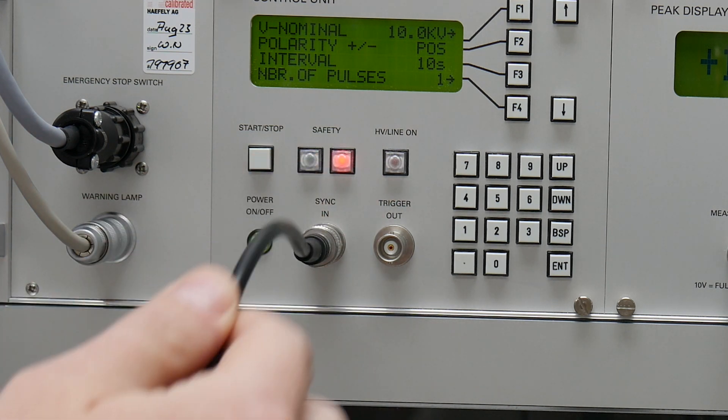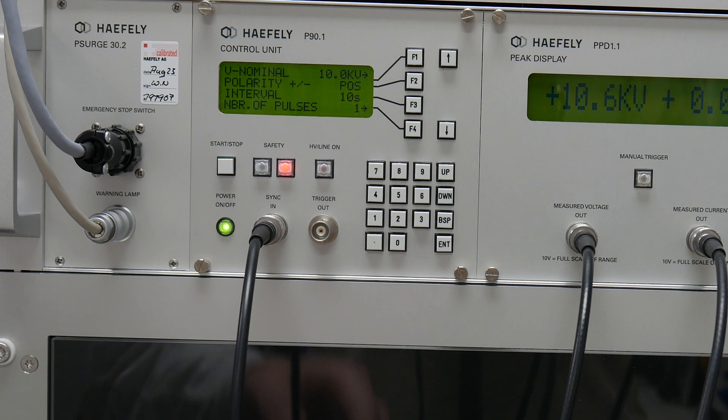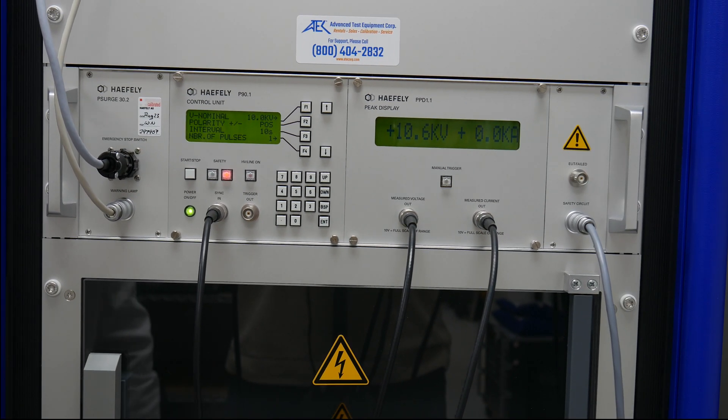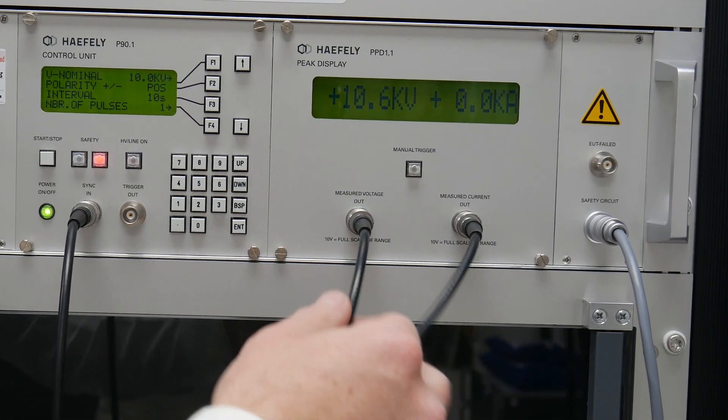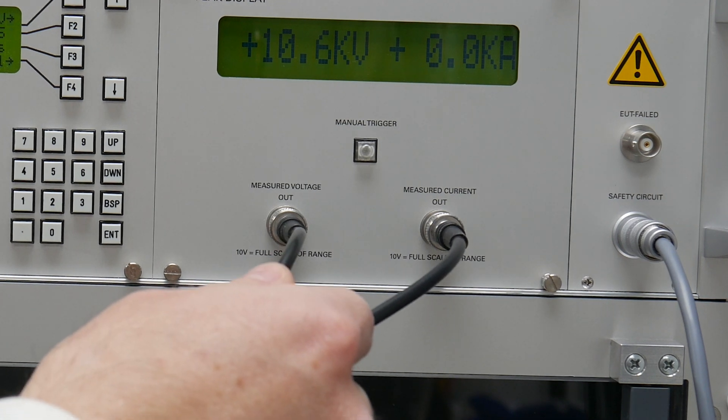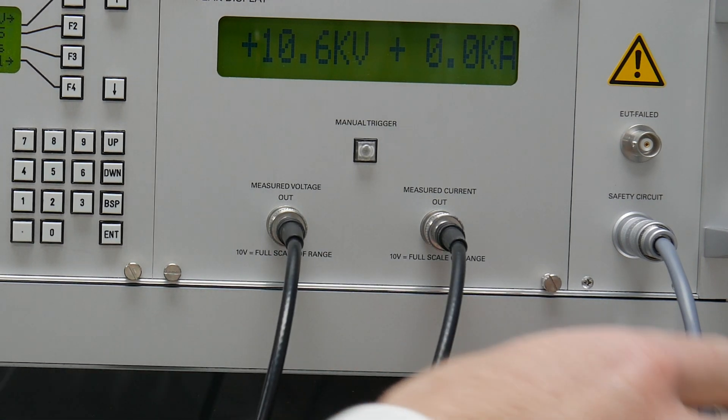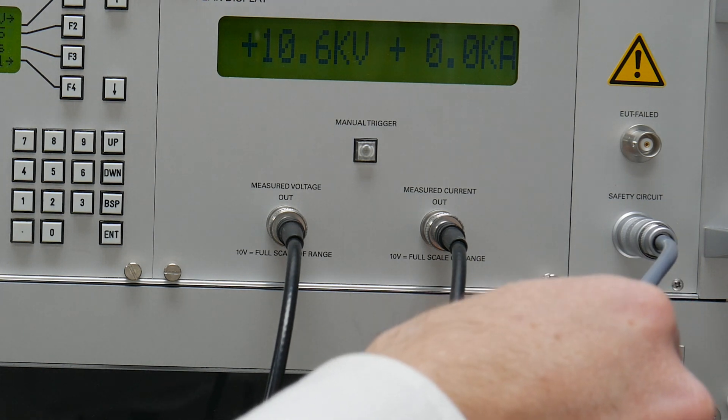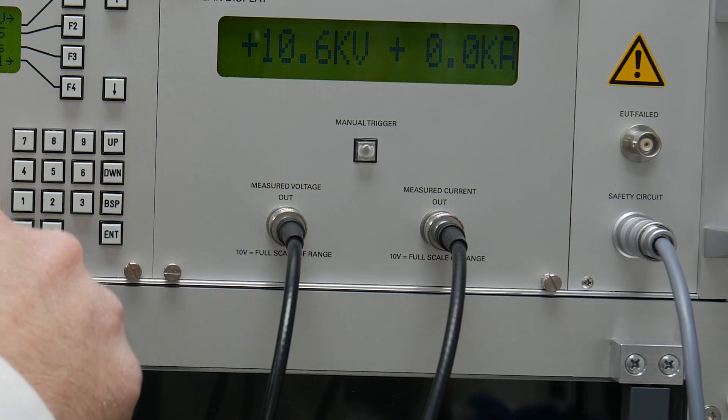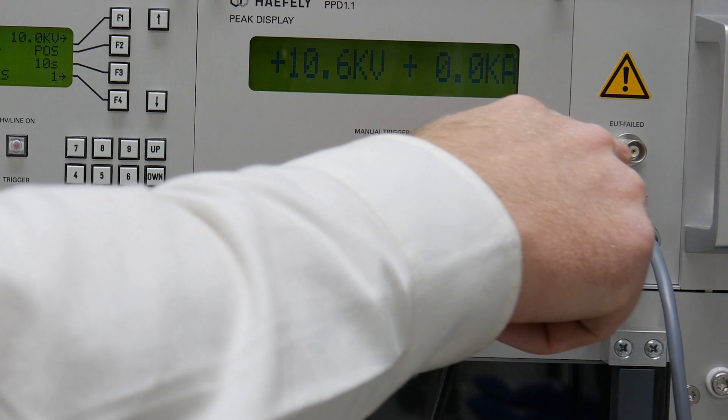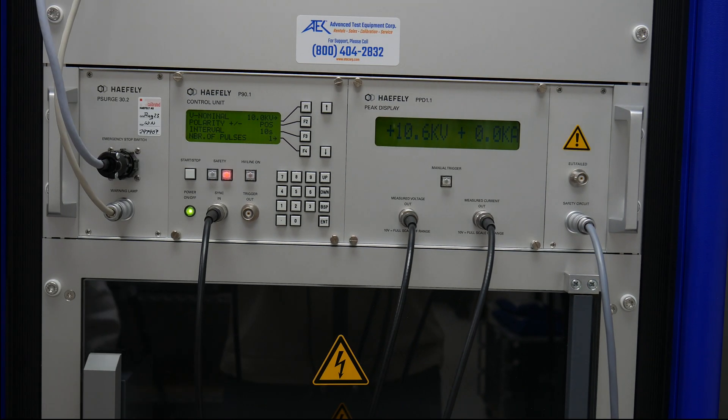Our synchronization cable goes to the CDN to allow pulsing on the power waveform. We also have our current and voltage monitoring ports that go to the oscilloscope. Our safety circuit cable and we also have a trigger out and EUT failed port used for automated testing.